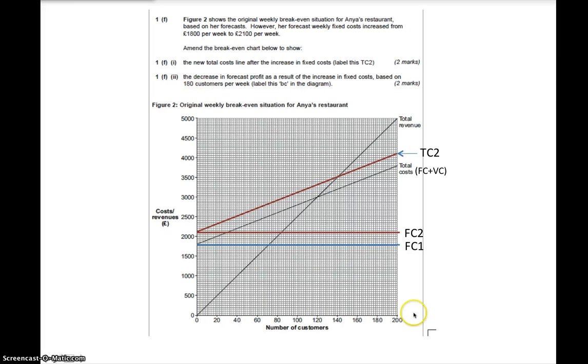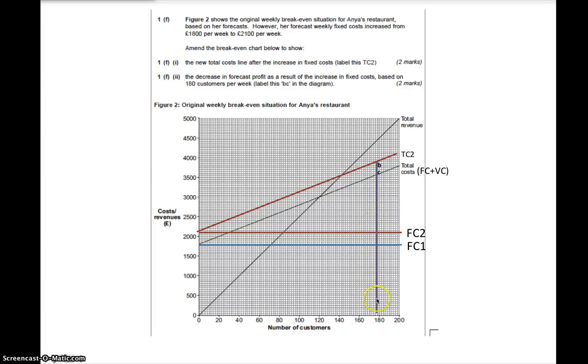But what they want you to do is to draw a vertical line from 180, going all the way up here, turning through these two lines, which is the original total cost line and your new total cost line, the one labeled TC2. And what they're saying is that they want you to label this section here to show the reduction in profit, which is the decrease in forecast profit that they're asking for here. So you label that section as BC. So that will look like this. So a vertical line going from 180, cutting through the two lines. And that section there then is labeled BC.